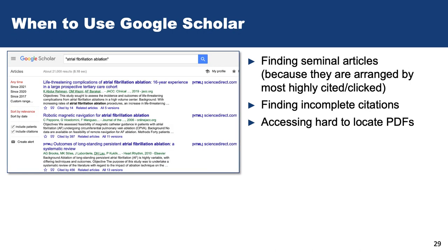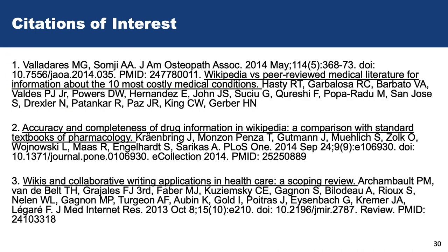What about Google Scholar? Google Scholar can be a very handy tool for a couple of purposes, but proceed with caution. Know that searches conducted in Google Scholar are based on your past Google search history and are not reproducible. Google Scholar scans the internet for scholarly and gray literature and may be helpful for a particularly difficult topic. You'll often be able to locate hard-to-find PDFs through Google Scholar. You can also use Google Scholar to find seminal works on a topic.